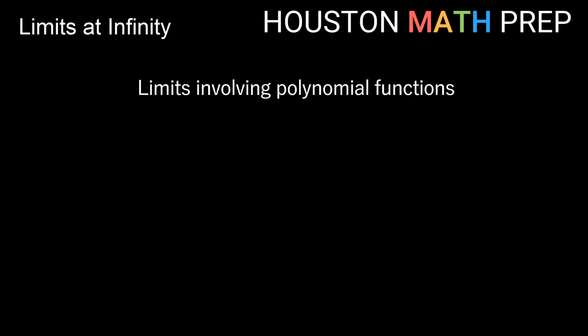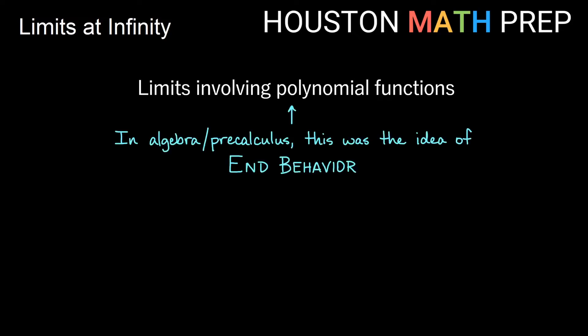If instead of rational functions we think about polynomial functions — which are actually very well-behaved — the idea of limits involving polynomials as we approach infinite values is what we called end behavior in pre-calculus or algebra. We talked about what happens as we travel to the right or left on a graph of a parabola, and you might have drawn end behavior diagrams with arrows going up and down.